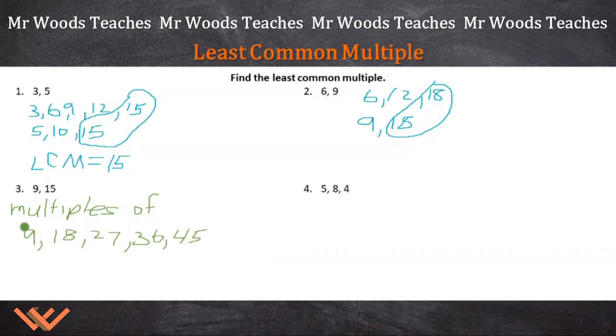And all I'm doing is just one times nine, two times nine, three times nine, four times nine, five times nine. And again, with my knowledge of the multiplication tables, I'm able to stop right here because I know that 15, 30, and 45 are the first three multiples. And there's my least common multiple right there is 45. So I put down LCM equals 45.